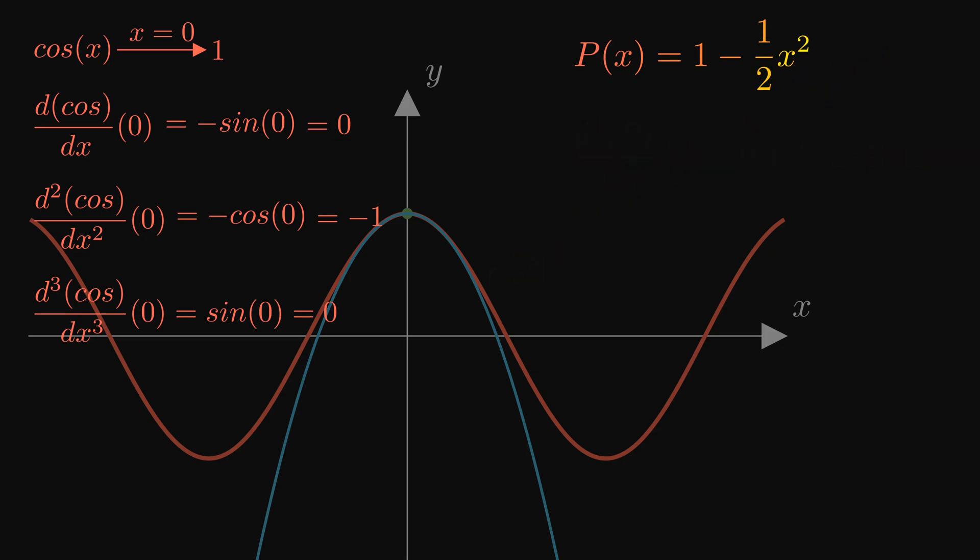To better understand and derive the general form of the Taylor series, let's add one more term, a fourth degree term, e times x to the fourth. Again, we'll try to make the fourth derivative of cosine resemble the fourth derivative of this polynomial. The fourth derivative of cosine is itself, and at x equals 0, its value is 1.